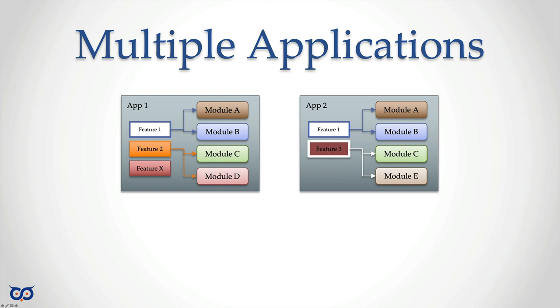Application two has its own features that make it a separate application. Feature one still needs to use modules A and B because it's the exact same feature. Features three might use some code from module C and some from module E. This is breaking up the code into pieces that makes it reusable. Having our code broken up into these modular subsystems—I'm using modular and subsystem interchangeably—allows us to use module C both in application one and two.